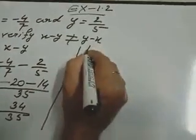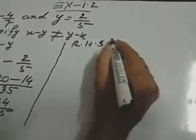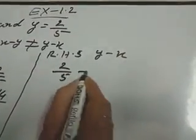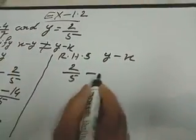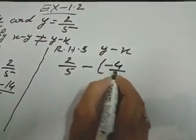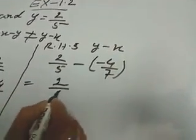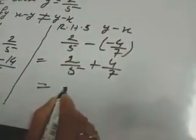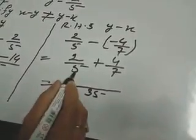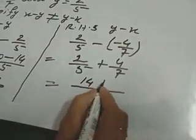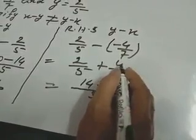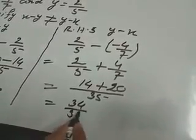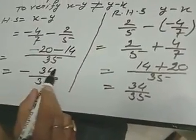Now we come to the right hand side. Right hand side is y minus x. Put value of y: 2 by 5, minus value of x: minus 4 by 7. Minus into minus gives plus, so we write 2 by 5 plus 4 by 7. LCM of 5 and 7 is 35. 35 divided by 5 is 7; 7 into 2 is 14. Plus 35 divided by 7 is 5; 5 into 4 is 20. So 14 plus 20 is 34. Denominator is 35. Right hand side is 34 by 35.